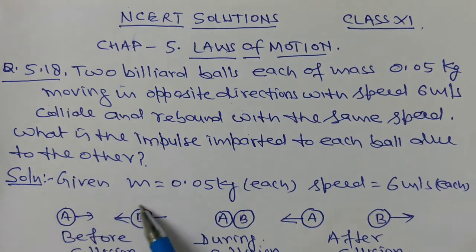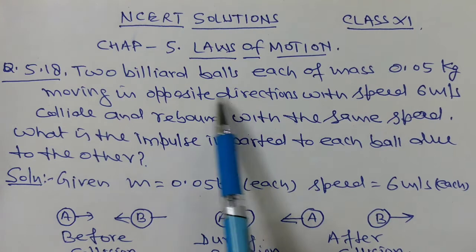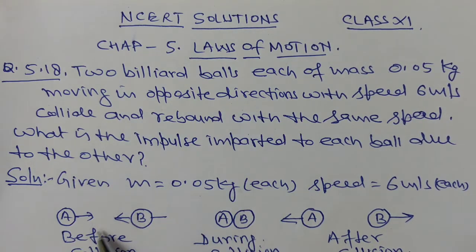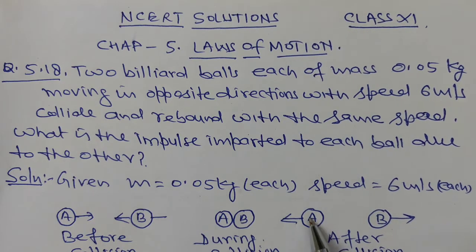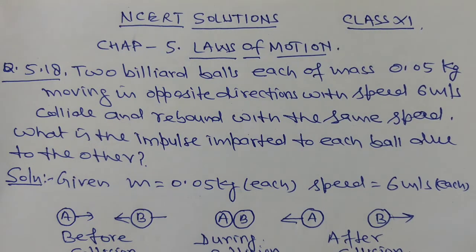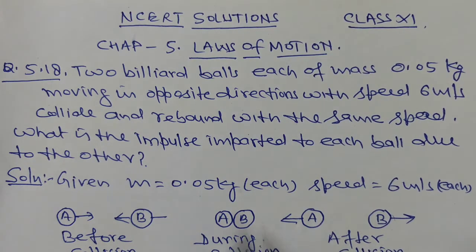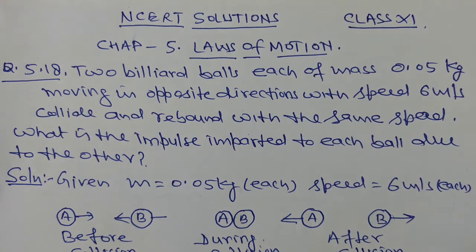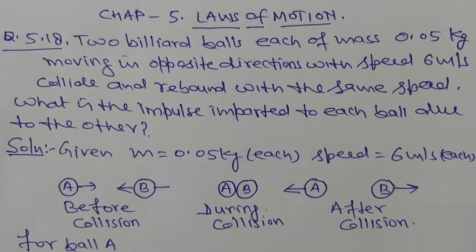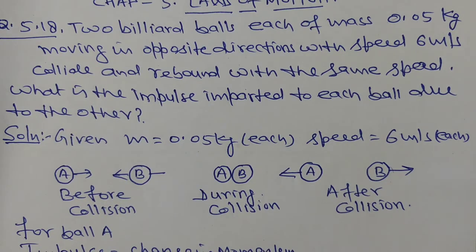Suppose this ball A and this ball B before the collision, they are moving in opposite direction. They collide with each other and after collision, they rebound. Body A moves in negative x-axis, body B moves in positive x-axis. We need to calculate impulse for both balls.